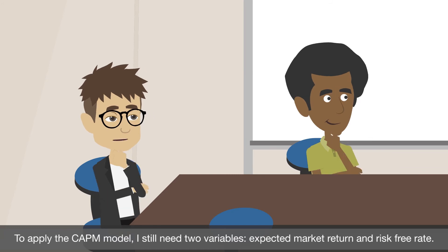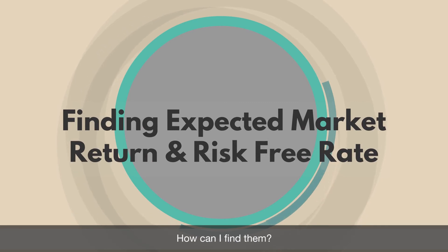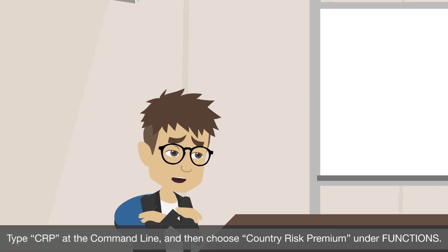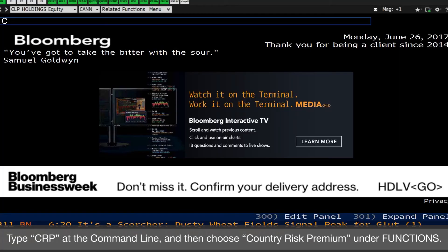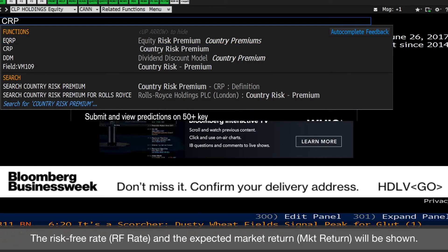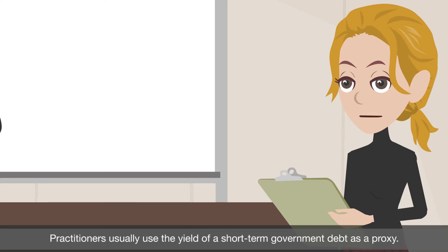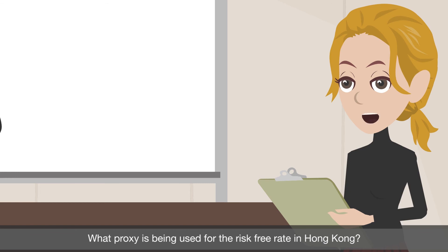Now I understand how to use this function, thanks. To apply the CAPM model, I still need two variables: expected market return and risk-free rate. How can I find them? No problem. Type CRP at the command line, and then choose Country Risk Premium under functions. Select the right region and the risk-free rate and expected market return will be shown. Notice that in reality there is no asset that is absolutely risk free. Practitioners usually use the yield of a short-term government debt as a proxy.